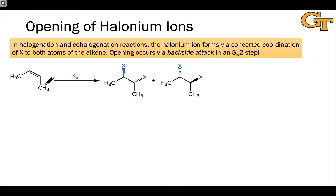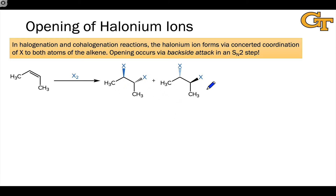Now, let's look at the case of cis-2-butene, which is this reactant here. We end up with a mixture of two products. If we compare these two products on stereochemical terms and try to decide what their stereoisomeric relationship is — I encourage you to pause the video and try this on your own first — we'll come to the conclusion that these are enantiomers.